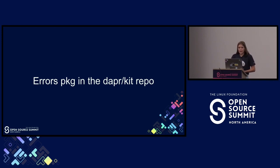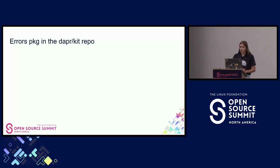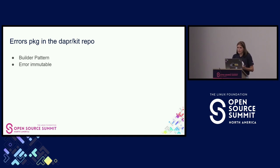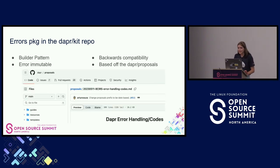Now let's learn a little bit about our errors package, which lives in our Dapr Kit repository. Dapr is written in Go and is fully open source, so it makes sense that Dapr Kit is also written in Go and fully open source — feel free to take a look. Our errors package is implemented using the builder pattern, which is a design pattern that lets you construct complex objects step by step. We already had a builder-like constructor making our error immutable by the caller, so we just doubled down and tweaked a few things, making it that builder pattern — again ensuring backwards compatibility. It is based off an official proposal in the Dapr proposals repo, and we did tweak it just a tiny bit to offer more flexibility while maintaining that backwards compatibility.